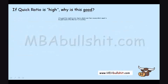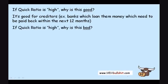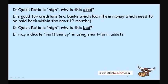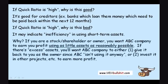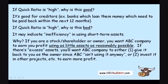If the quick ratio is high, why is this good? It's good for creditors such as banks which loan money to the company and need to get paid back within the next 12 months. Why is a high quick ratio bad? It might indicate inefficiency in using short-term assets. As a shareholder, you want ABC Company to earn profit using as little assets as reasonably possible. If there are excess assets, you'd want ABC to either return them to you as the owner or invest in other projects to earn more profit.